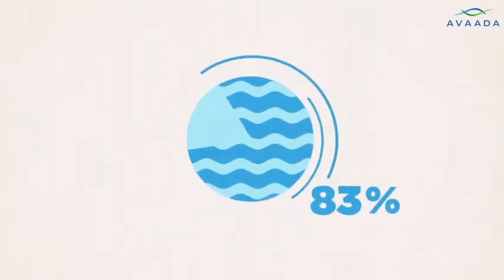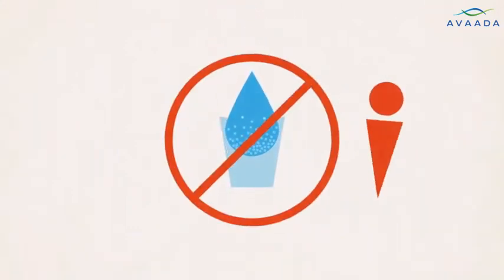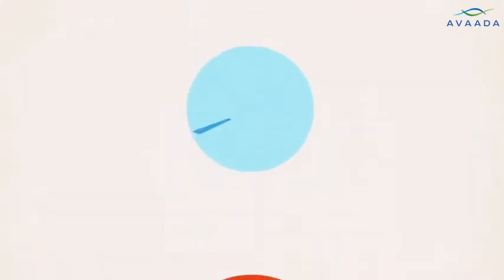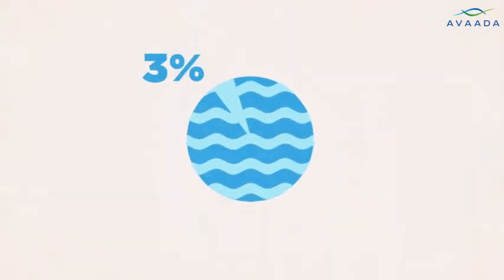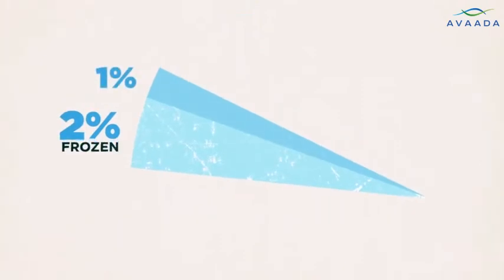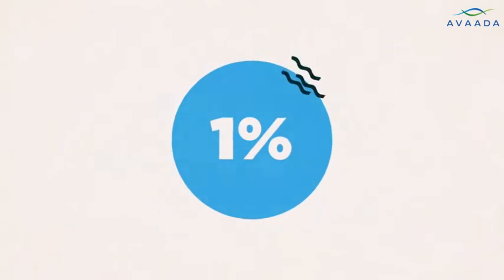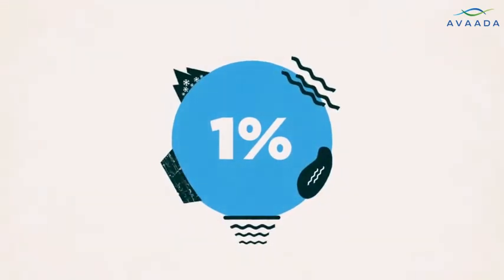97% of Earth's liquid is salt water, too loaded with minerals for humans to drink or use in agriculture. Of the remaining 3% of potentially usable fresh water, more than two-thirds is frozen in ice caps and glaciers. That leaves less than 1% available for sustaining all life on Earth, spread across our planet in rivers, lakes, underground aquifers, ground ice, and permafrost.